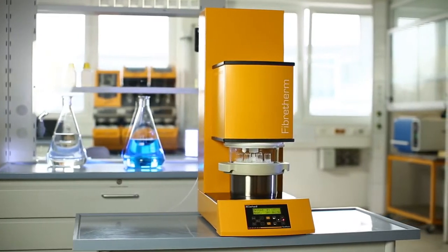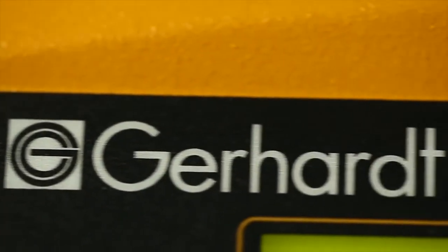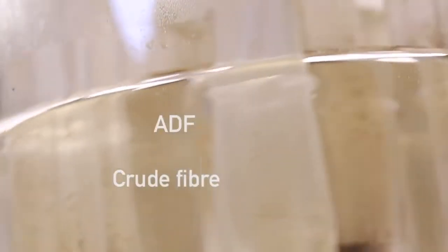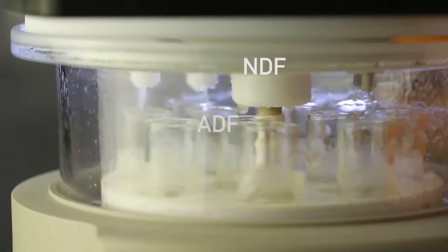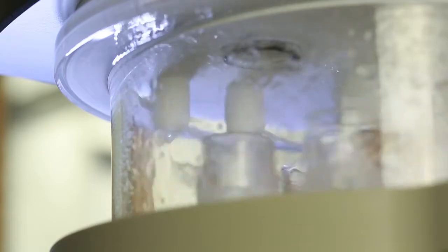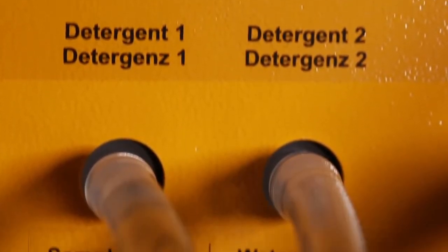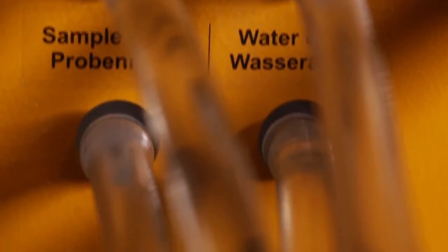Fiber-therm handles all digestion and filtration processes for the determination of crude fiber, ADF, and NDF fully automatically. For this purpose, the samples in the digestion vessel are continuously agitated. All detergents are automatically dozed by calibrated pumps.